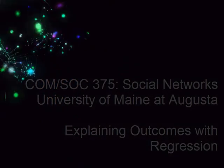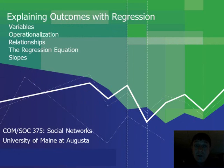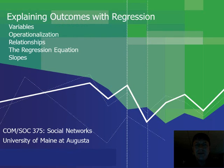Hello, this is James Cook, Assistant Professor of Social Science at the University of Maine at Augusta, and we are talking our way up to MR-QUAP, Multiple Regression Quadratic Assignment Procedure, as a statistical exercise in explaining actions according to social network attributes. But before we do a discussion of multiple regression quadratic assignment procedures, we have to think about what regression means more generally, and that's what the purpose of this video is.